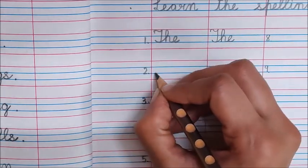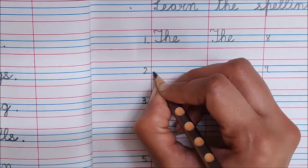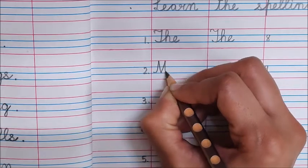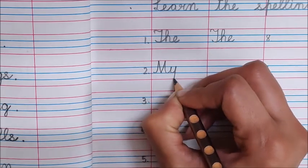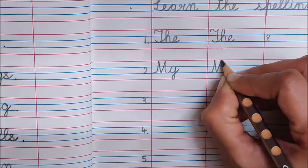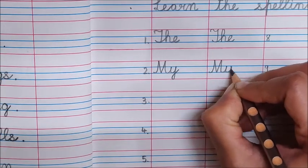Next word is My. Write down capital M in cursive. M-Y My. M-Y My.